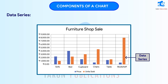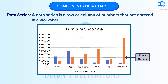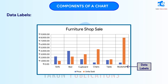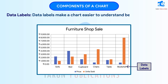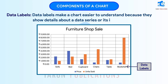Data Series: A data series is a row or column of numbers that are entered in a worksheet and plotted in your chart. Data Labels: Data labels make a chart easier to understand because they show details about a data series or its individual data points.